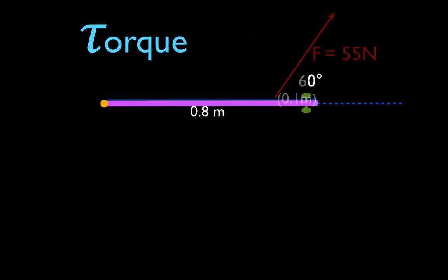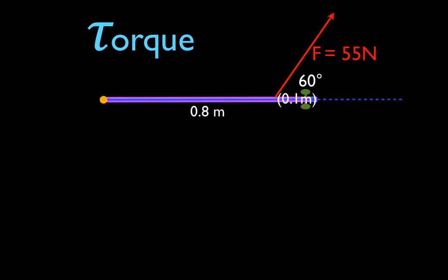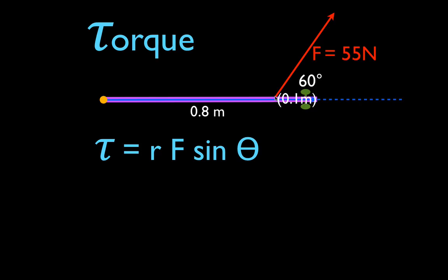Let's try one more. This problem is basically the same with a few modifications. Torque, door — the door is 0.8 meters wide again. The force is 55 newtons. It's applied in such a way that the angle between the radial vector and the force vector is 60 degrees. However, the force in this case is not applied at the end of the door — it's applied 0.1 meters, or a tenth of a meter, from the end of the door. So once again we'll just use our torque equation.